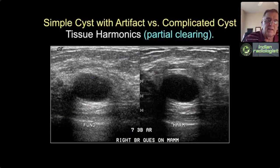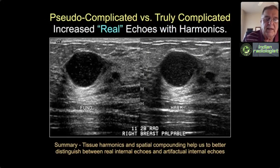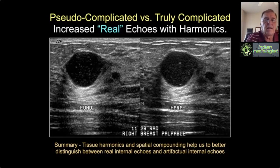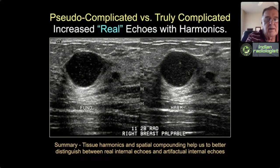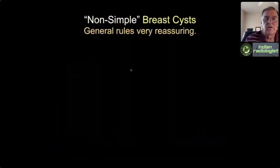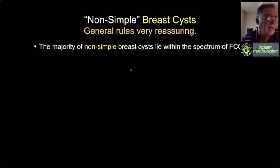On the left is a complicated cyst with a fat-fluid level, and with harmonics a lot of those artifactual echoes are cleared out. With fundamental imaging, proteinaceous debris within the cyst becomes more echogenic with harmonics—because it's real stuff. When internal echoes are artifactual, harmonics tends to decrease them; when real—caused by proteinaceous or fatty debris—harmonics tends to increase them. So harmonics gives better ability to distinguish real from artifactual internal echoes. Spatial compounding achieves a similar effect through different means. I'm a big believer in scanning with both spatial compounding and harmonics on.